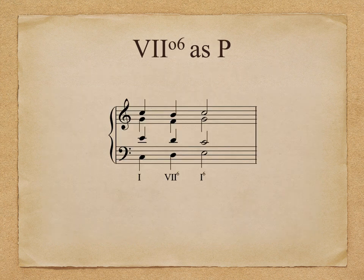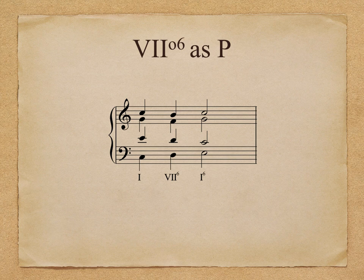The final figuration we're going to discuss in this video is that of passing motion. First inversion triads can occur as part of a passing motion within three or more chords. Often the outer chords will be the same harmony, thus the prolongation or expansion of that harmony through the use of passing motion. In our example, the VII°⁶ appears through stepwise motion in the bass, which leads from I to I⁶. Listen to this example and try to hear DO-RE-MI in the bass.